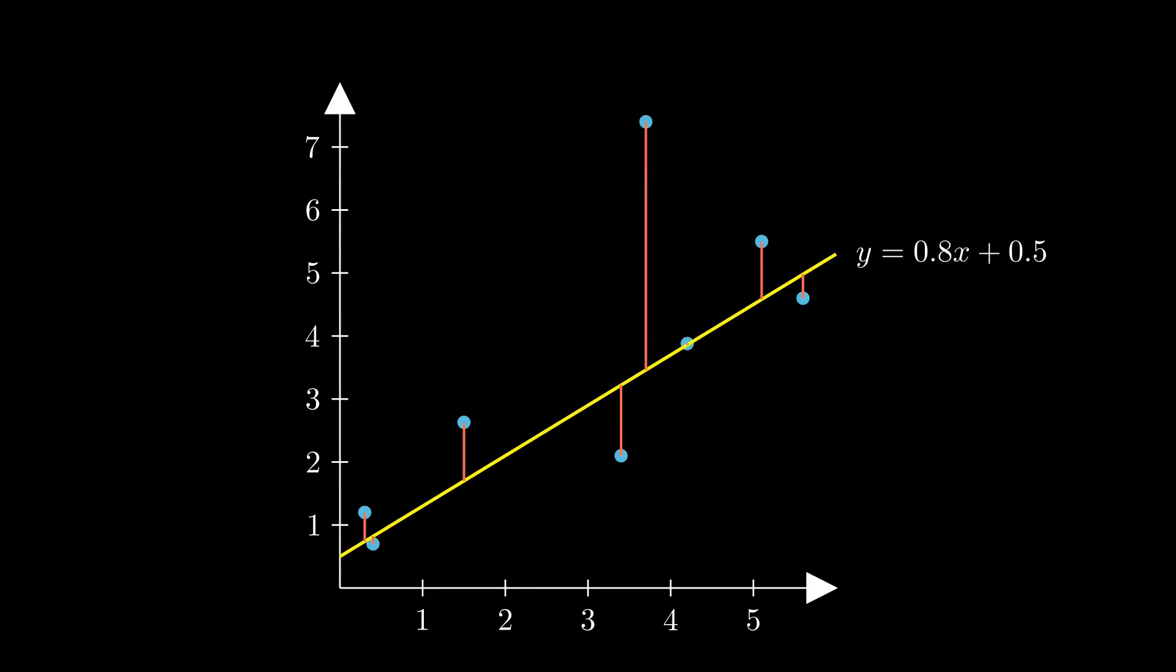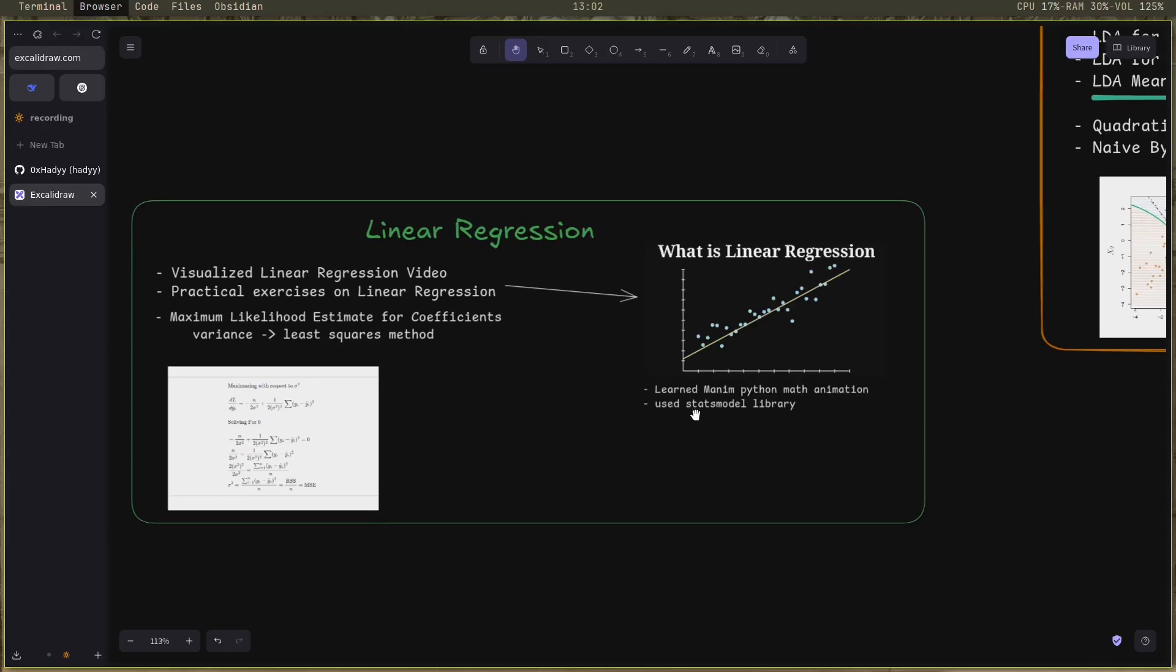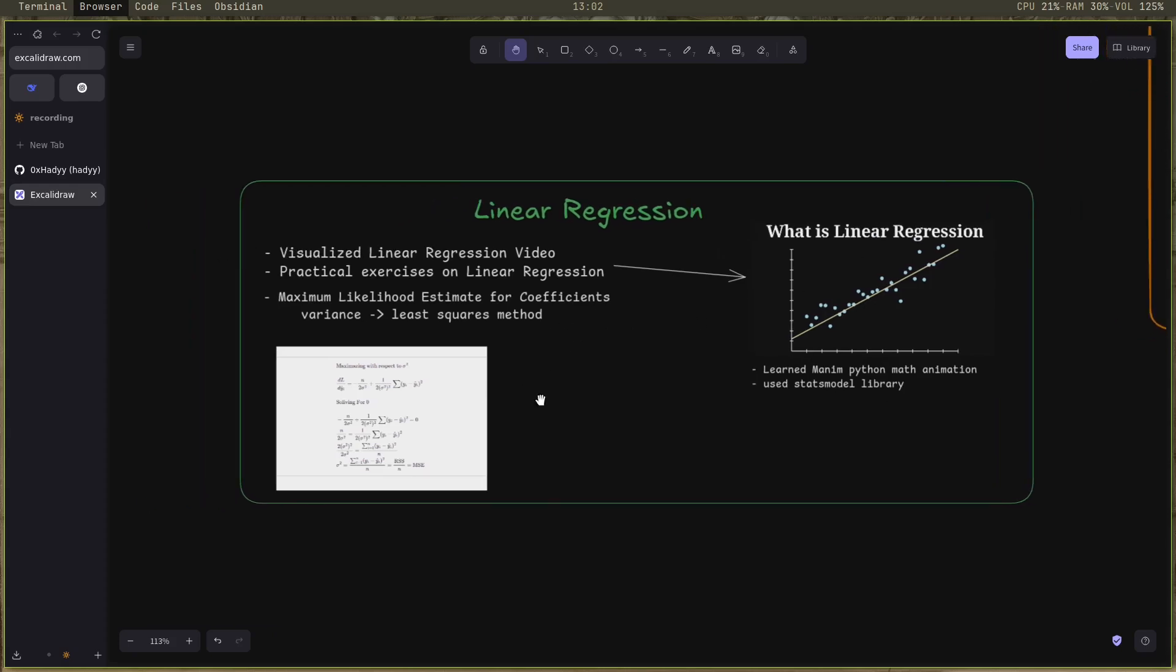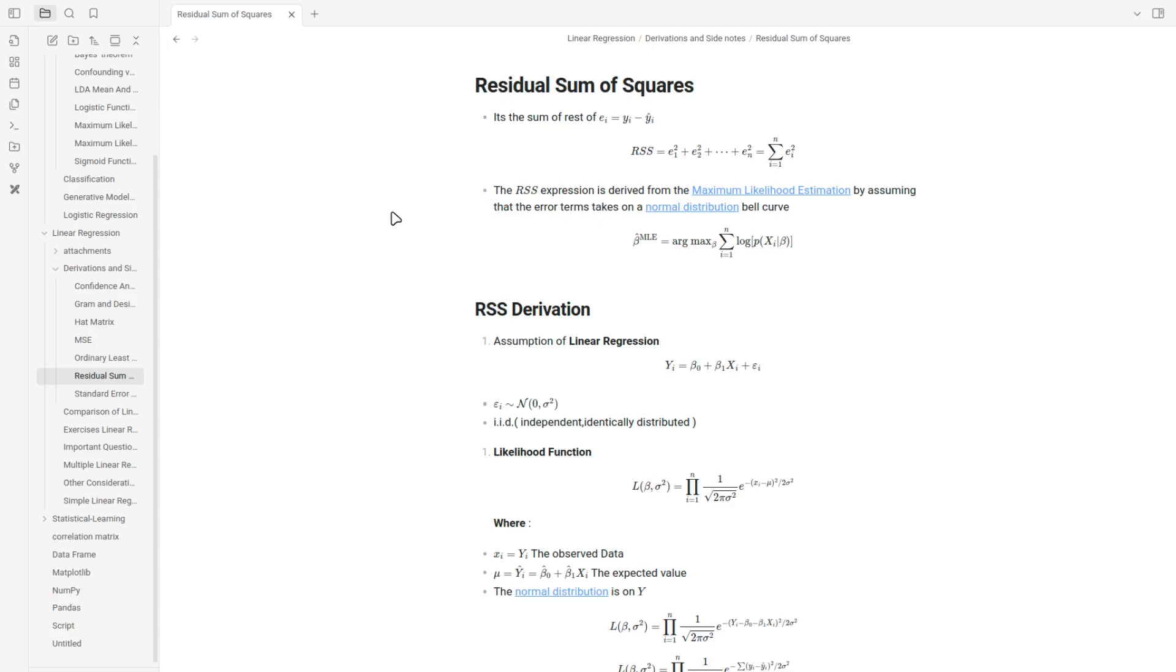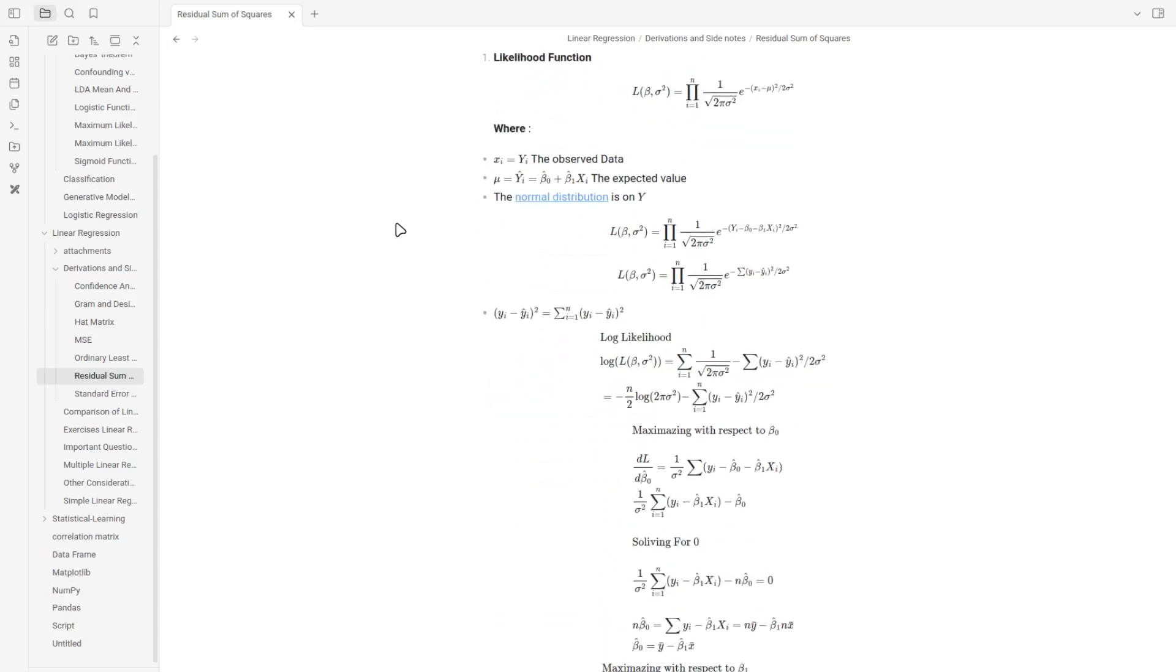I also used the statsmodels library for Python to fit and use some dummy data to get to know the linear regression on the applied side more. I did the practical exercises on the book also.